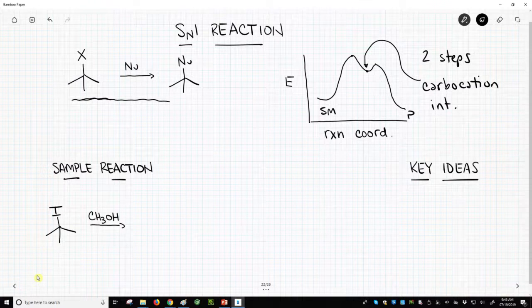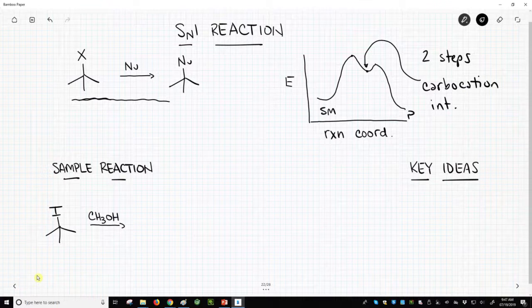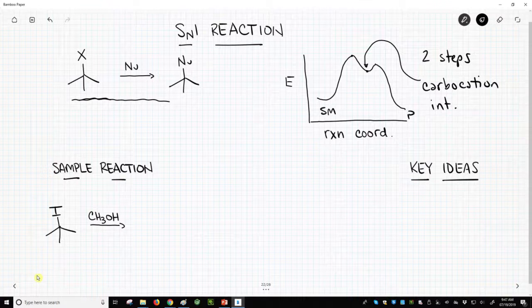Well, we take our alkyl halide and methanol is a typical reagent that we would use for this. Note that there is no nucleophile in here, so this is not going to be an SN2. There's no base, no strong base. There's not going to be an E2.